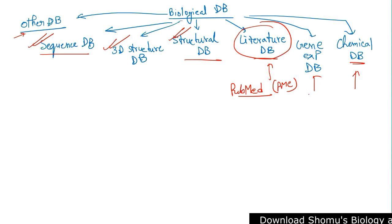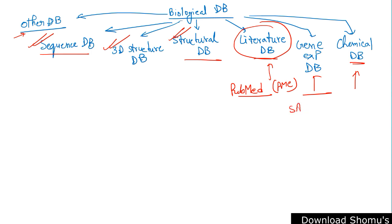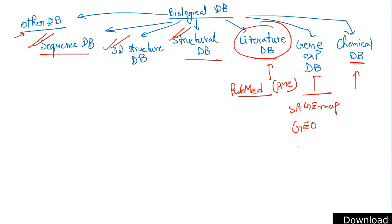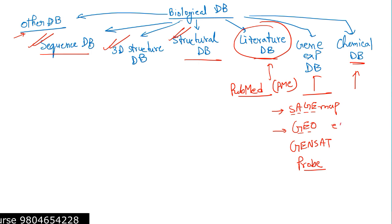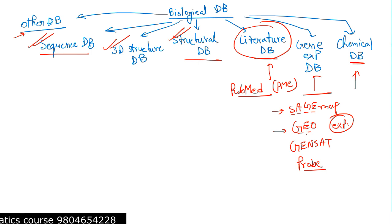For gene expression databases, there are three major subcategories: SAGE MAP, which stores data from serial analysis of gene expression (SAGE); GEO, which is a repository of high-throughput gene expression profile data that can be retrieved anytime; and GENSAT, a database of the central nervous system of mouse.